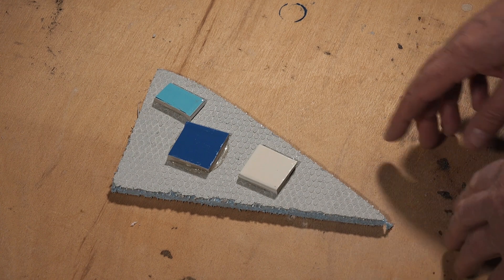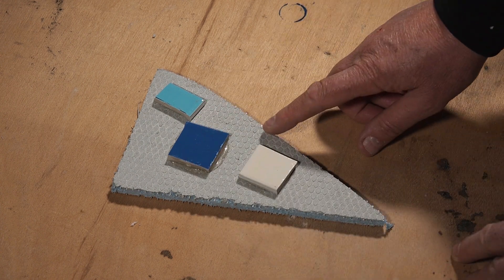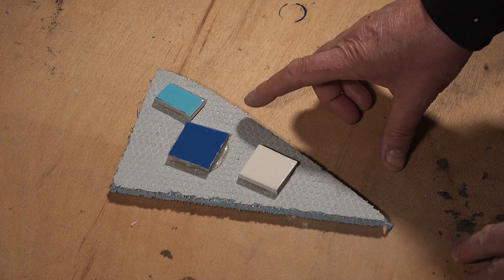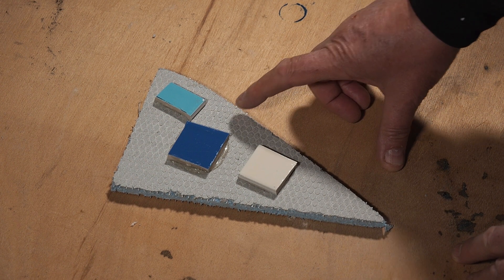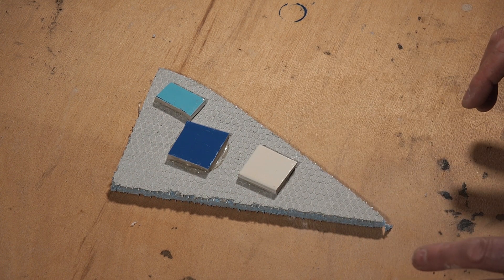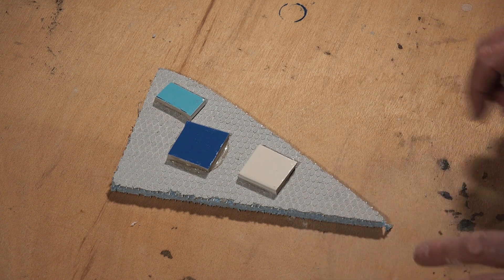What I did was I actually got some Johnson tiles and I adhered them down with Prep multi-use adhesive onto some Marmox board, just to see how it would go with Marmox.